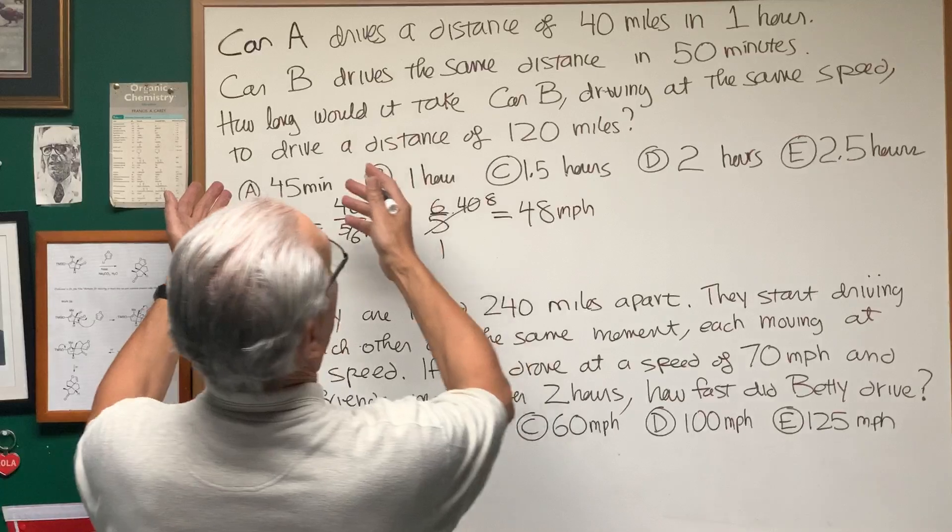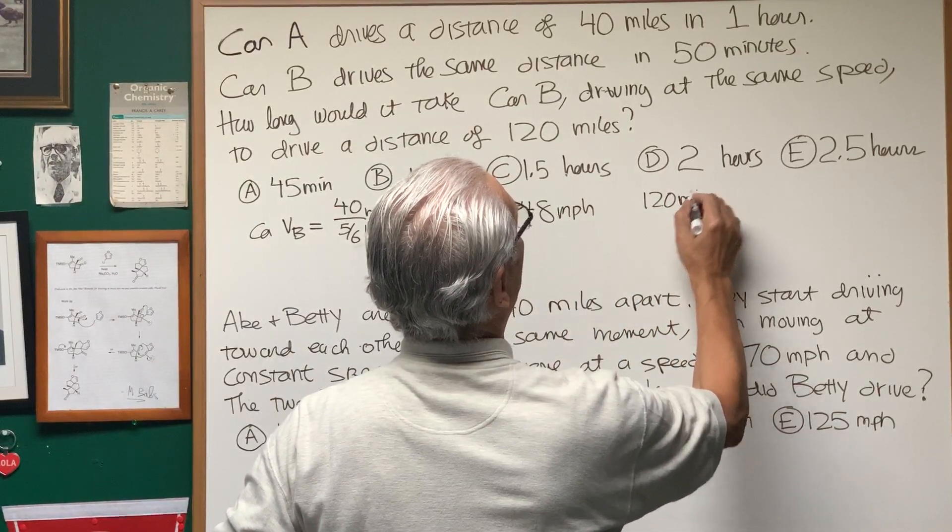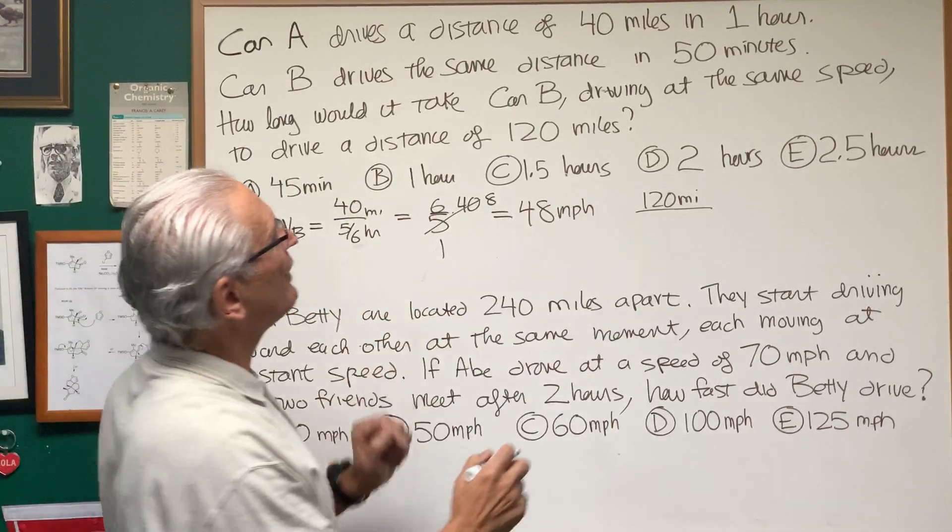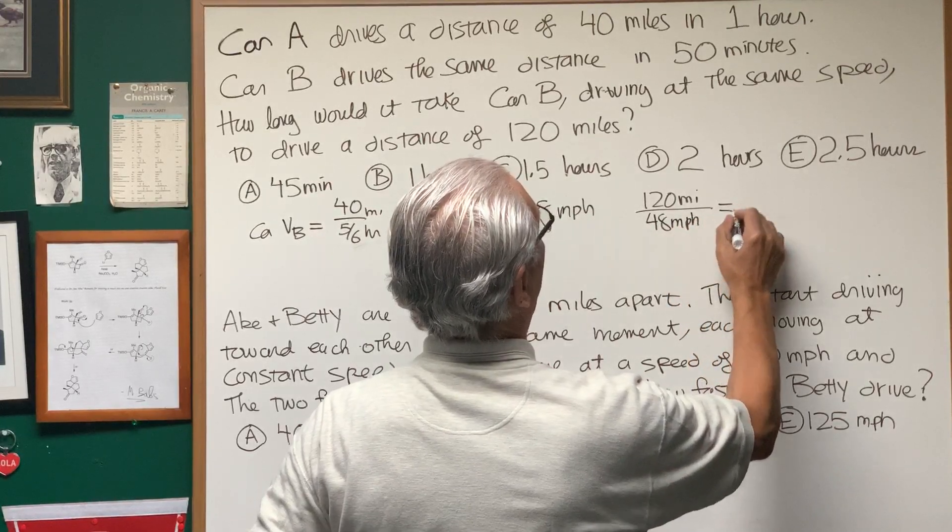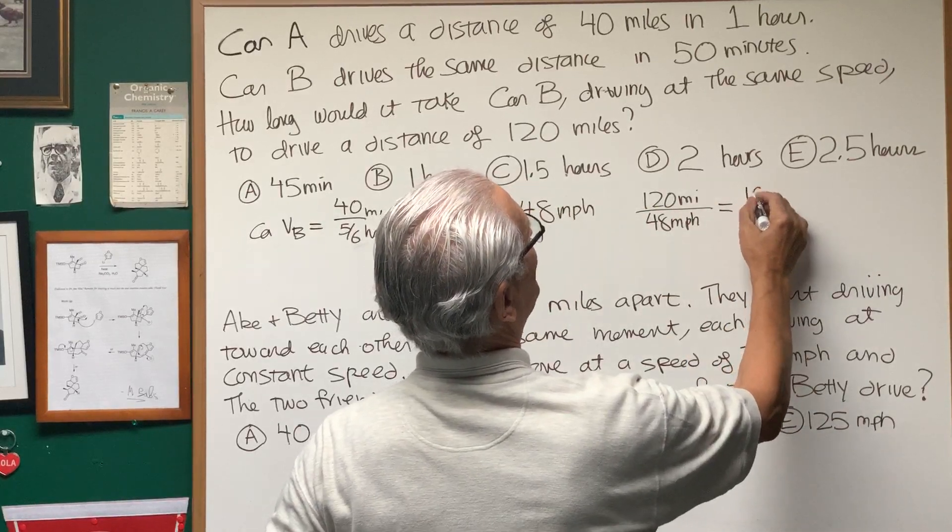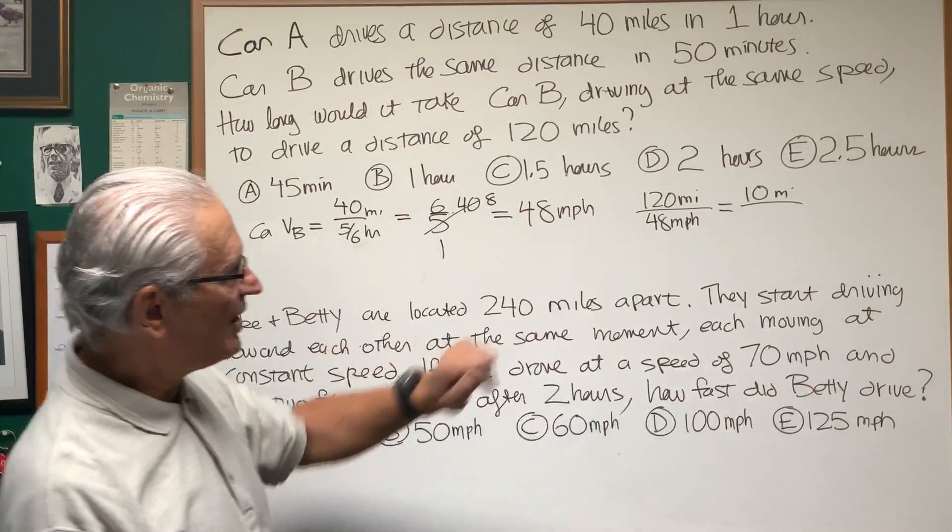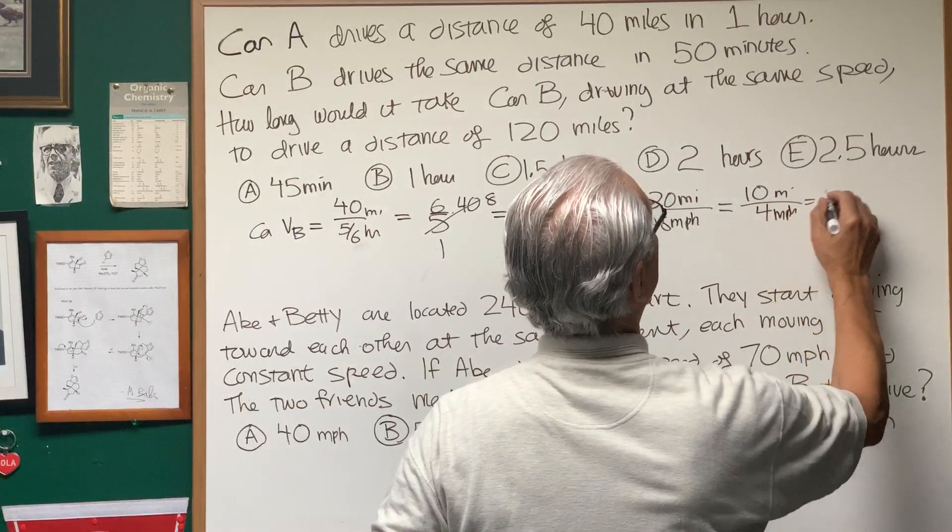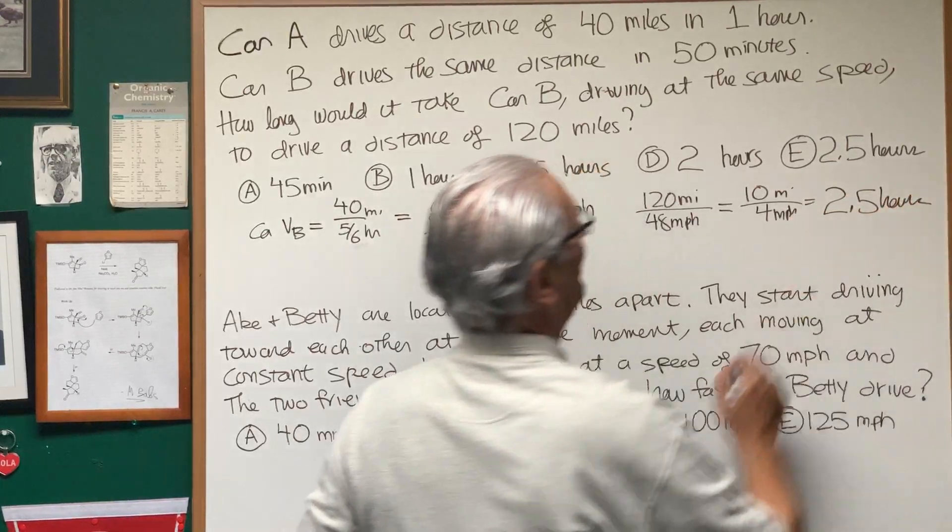Once we know Car B's velocity, how long will it take Car B to drive 120 miles at the same rate? We're going to divide the number of miles over the velocity, 48 miles per hour. And that's going to give us, let's see, 12 goes into 120 ten times, 12 goes into 48 four times, and this comes out to be 2.5 hours.